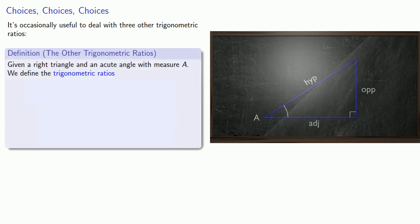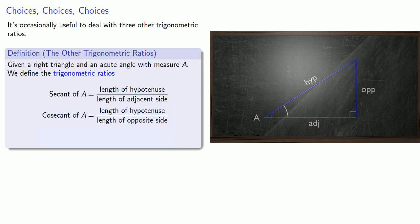The trigonometric ratio secant is the length of the hypotenuse over the adjacent side, cosecant is hypotenuse over opposite, and cotangent is adjacent over opposite.